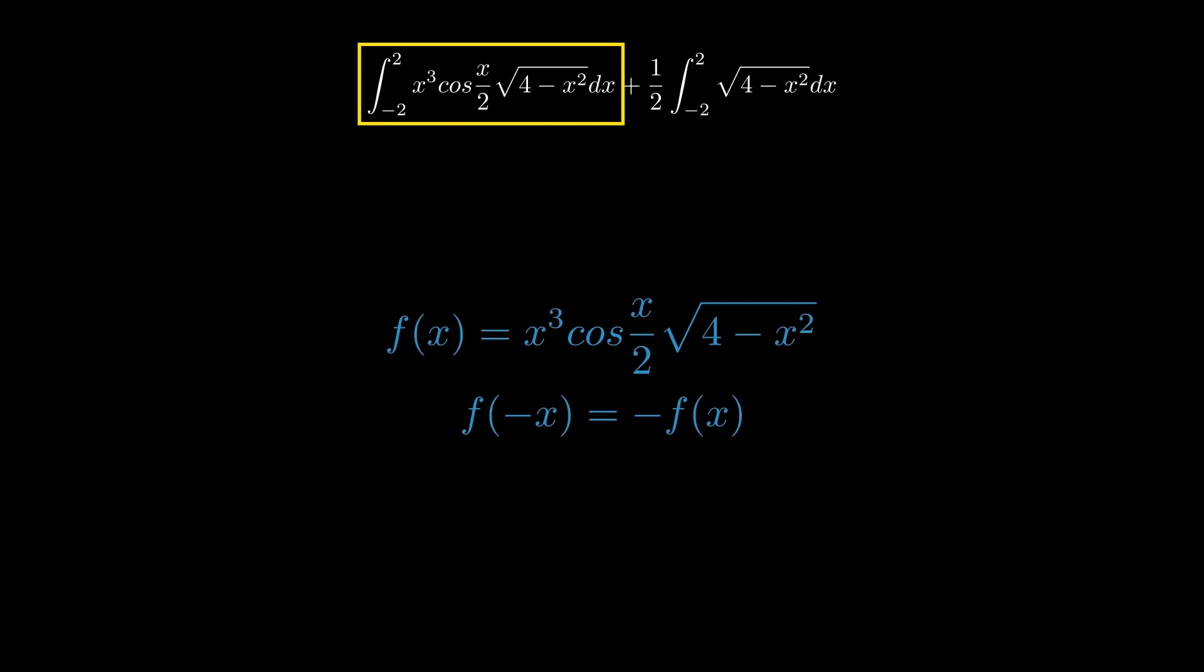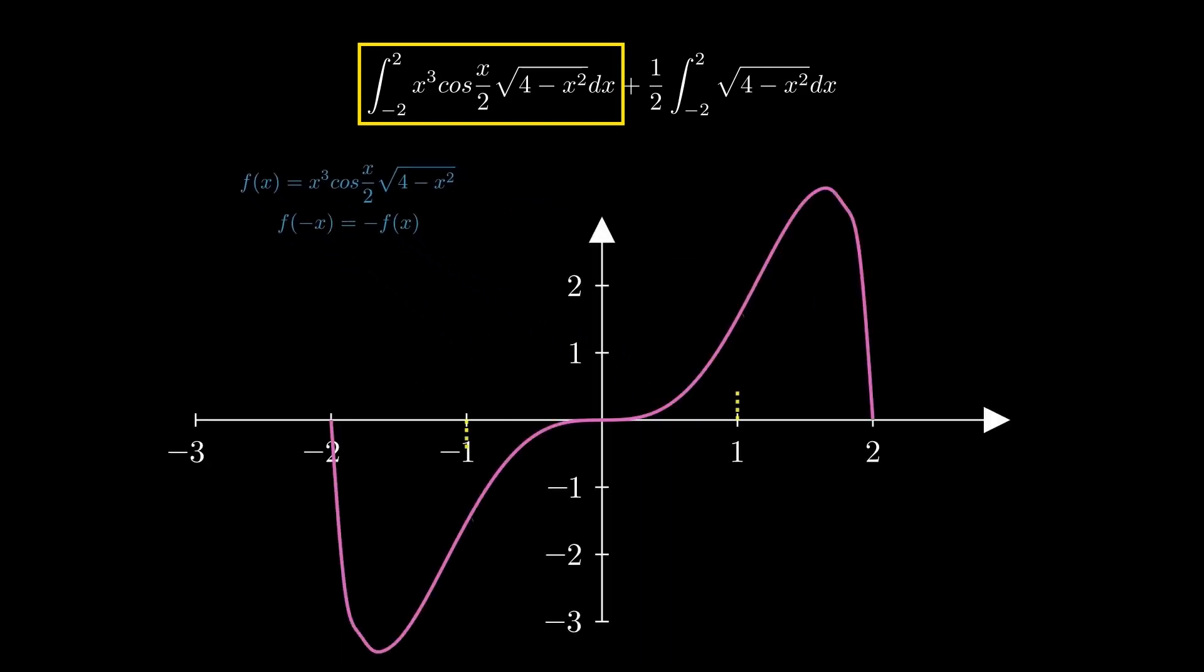To visually understand this property, please take a look at the graph of this function. As you can observe, for any x equals a and minus a, the functional values are equal in magnitude, but opposite in direction.